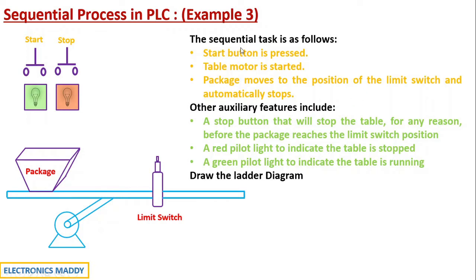So they've given us a sequential task that is at the first place we have to press the start button. So once the start button is pressed, table motor is started. So the motor starts which is connected through a conveyor and what happens is that the package starts moving to a position of the limit switch and automatically stops. So the package starts moving in this particular fashion and stops once it reaches the limit switch.